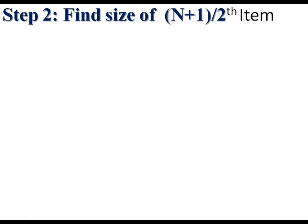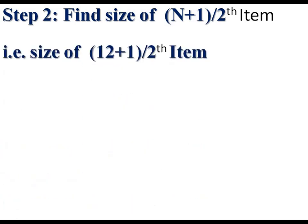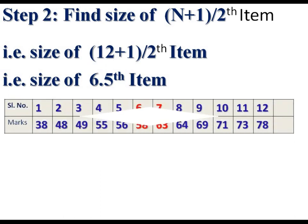Median is equal to size of (N+1)/2th item. Size of (12+1)/2th item - 12+1 = 13, divided by 2 = 6.5. Size of 6.5th item. There is no 6.5, there is 6 and 7.